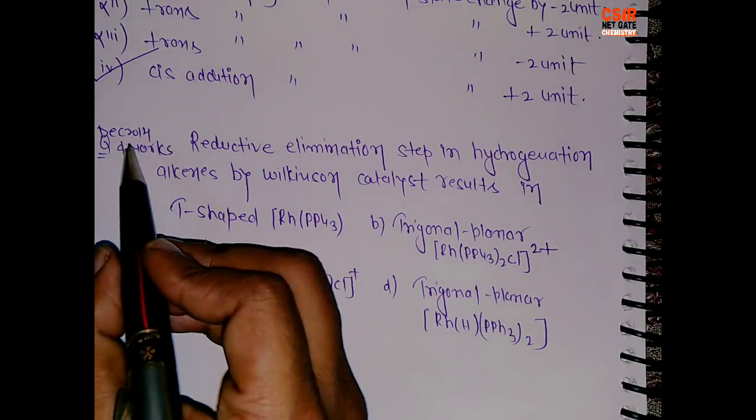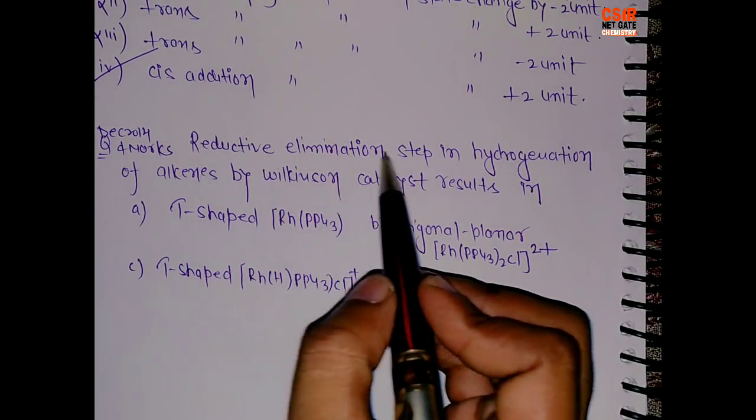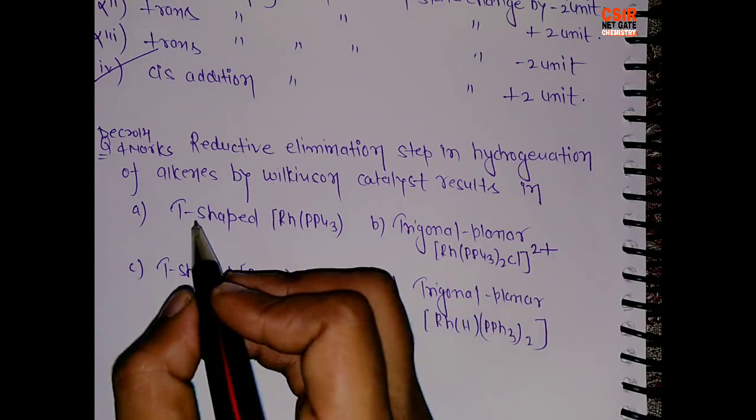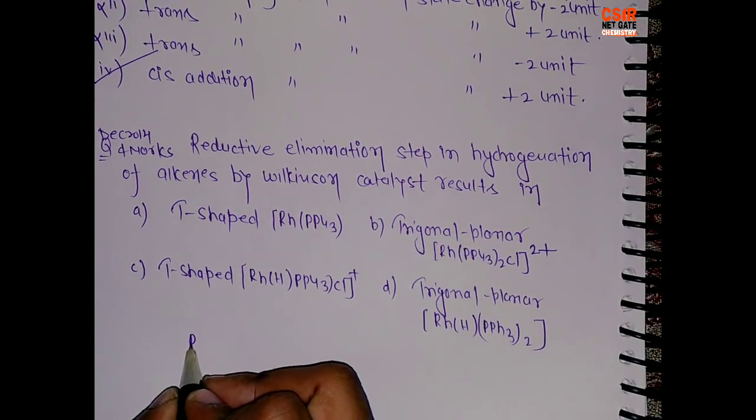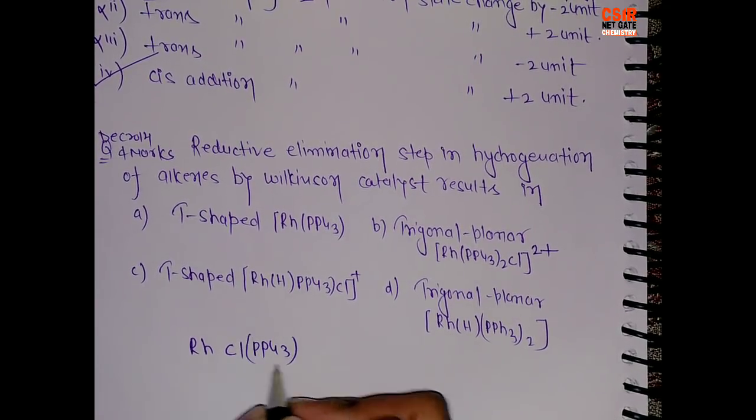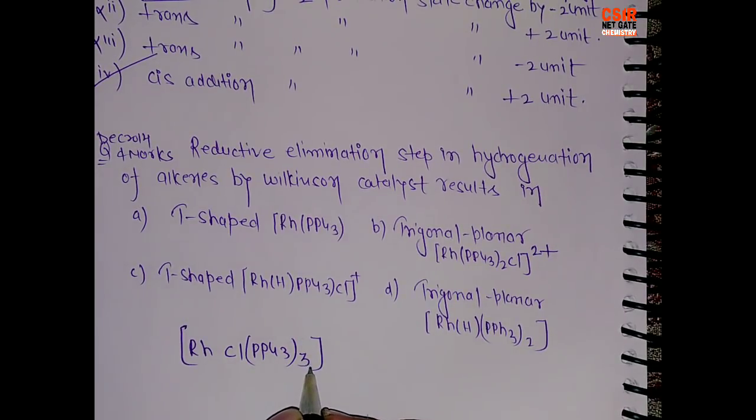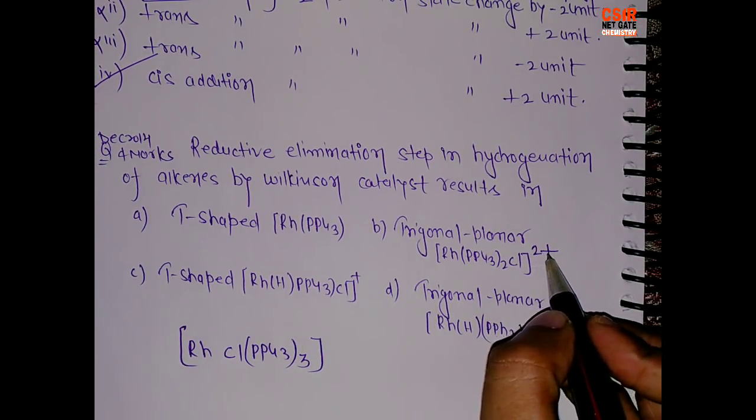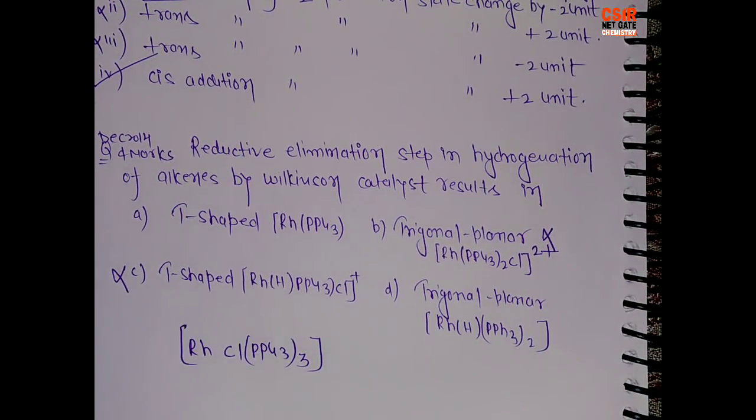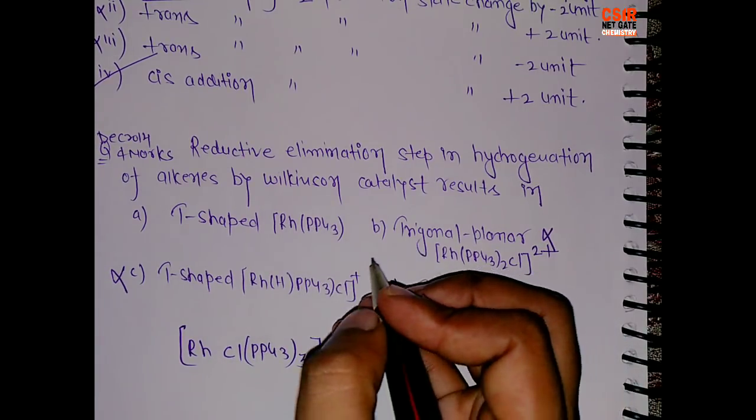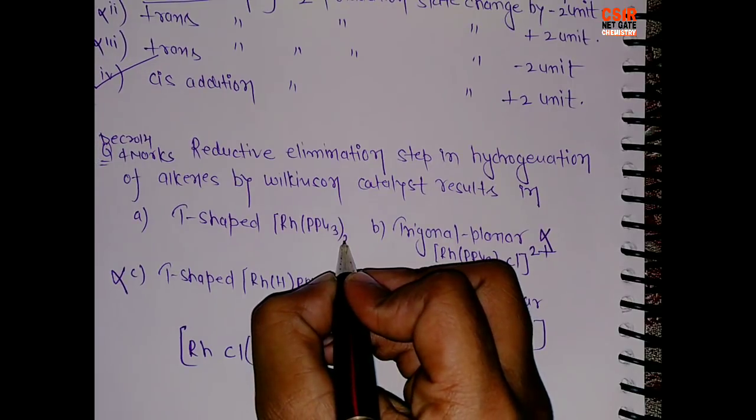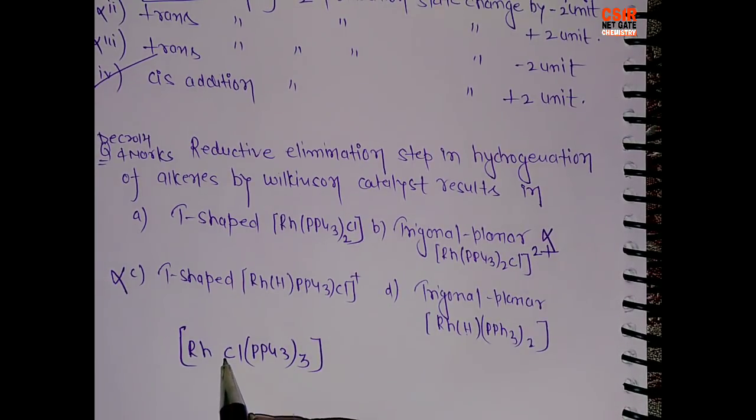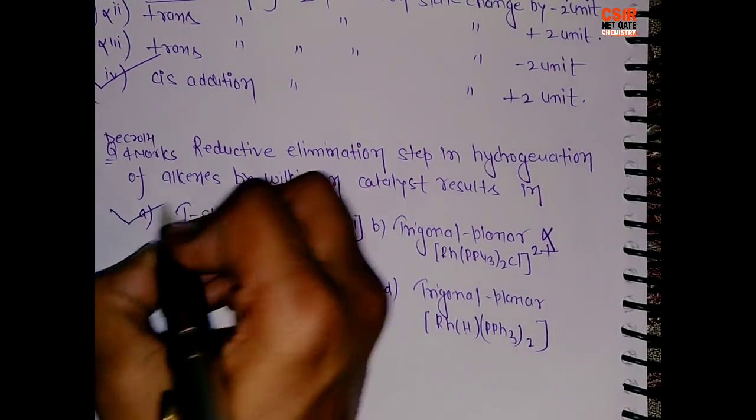Now come here. This came for 4 marks in December 2014. Reductive elimination step in hydrogenation of alkenes by Wilkinson catalyst results in. As I told you, it will be T. First of all, Wilkinson catalyst is RhCl(PPh3)3. So let's say if 1 phosphine ligand out of these 3 is leaving out, it is a neutral ligand, so there shouldn't be any charge on the compound. But here you can see 2 plus, so this cannot be the answer. Plus 1 charge, this cannot be the answer. So 1 is T-shaped, Rh(PPh3)3, this will be 2, and 1 Cl. And this is Rh hydrogen (PPh3)3 2. So in the Wilkinson catalyst we have Chlorine as a ligand, not hydrogen. So first is the correct answer.